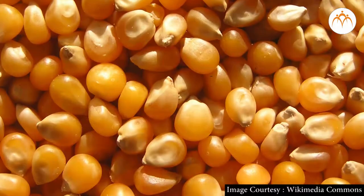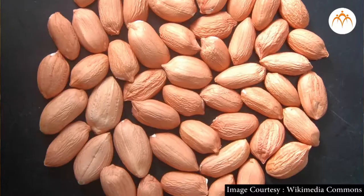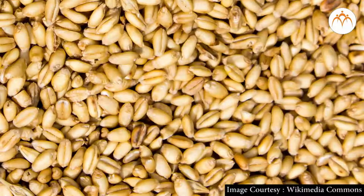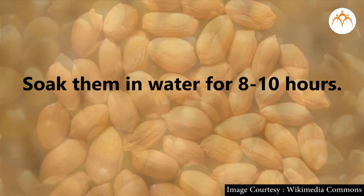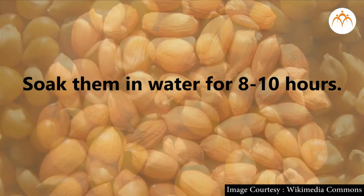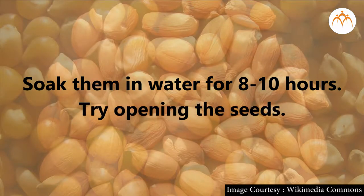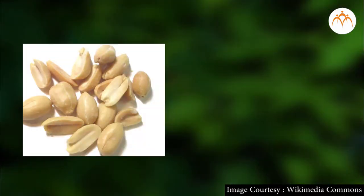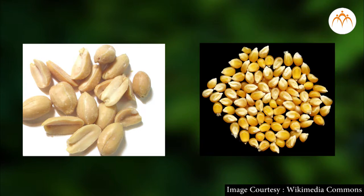Let's try this activity. Take maize, groundnut, and wheat and soak them in water for 8 to 10 hours. Try opening the seeds. You will find that you can easily break the soaked groundnut into two halves, but you cannot open the soaked maize into two halves.